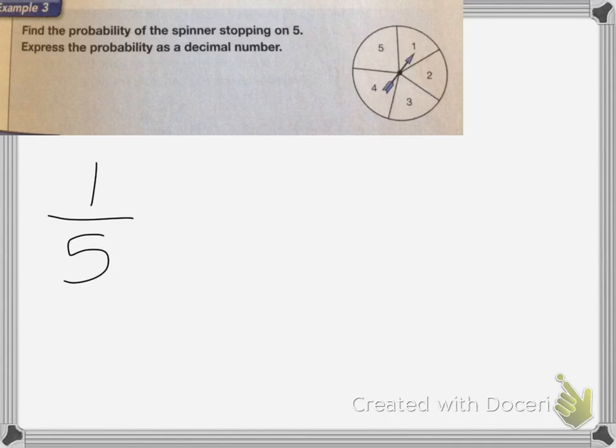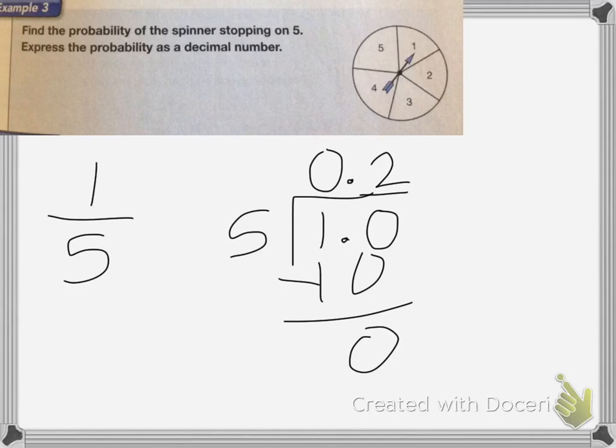The way to convert this to a decimal is by dividing 1 divided by 5. This fraction bar here means divide, so I'm going to do 1 divided by 5. 5 goes into 1 0 times, so I'm going to add a decimal and a 0. 5 goes into 10 2 times, which is 10, so I'm finished. The decimal is 0.2.